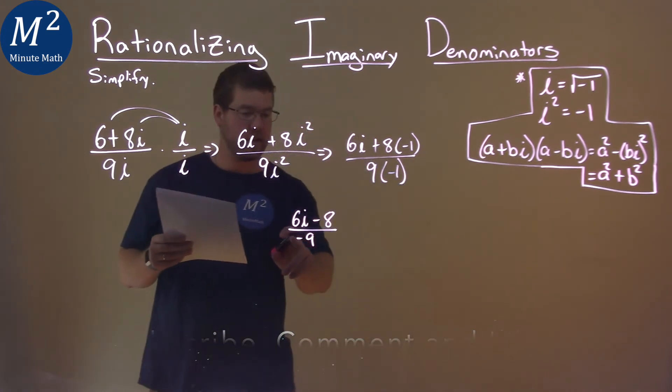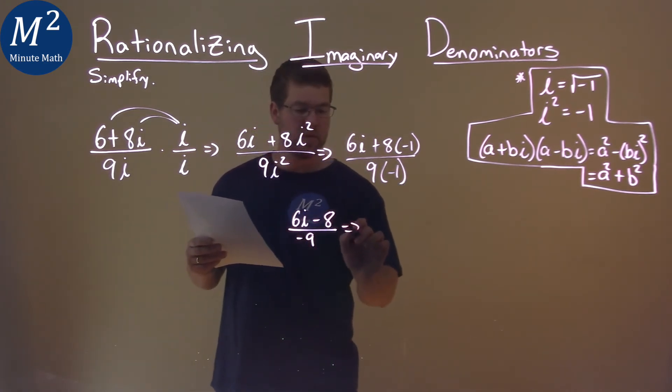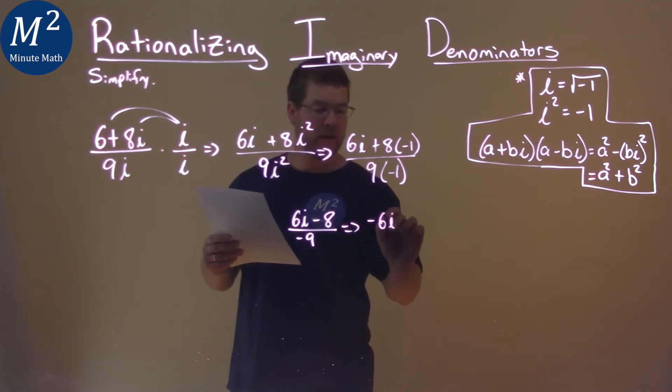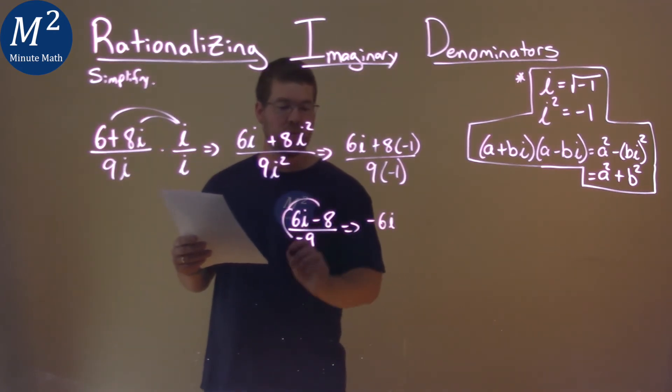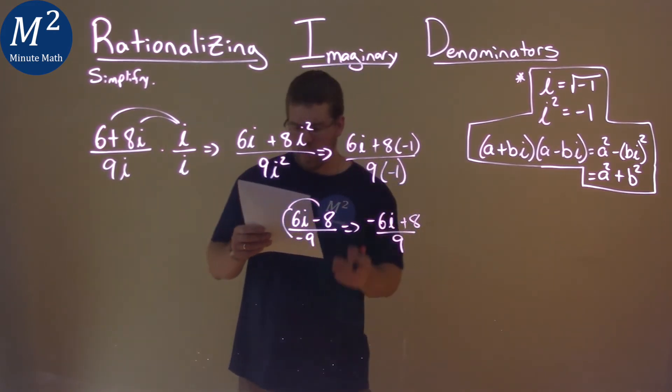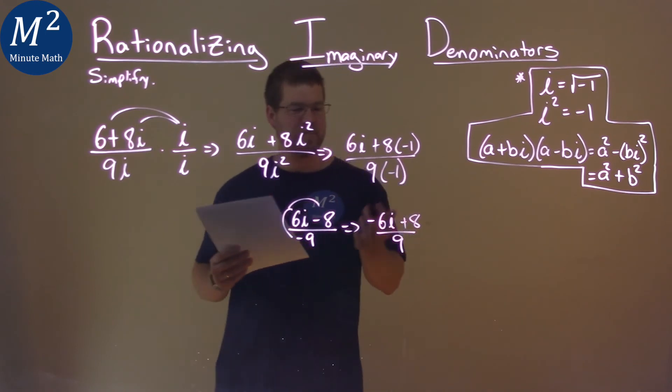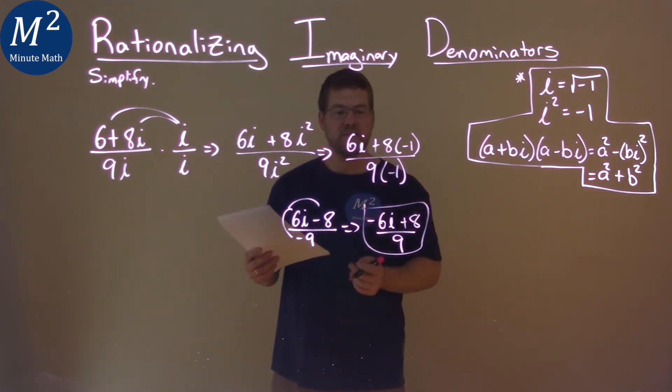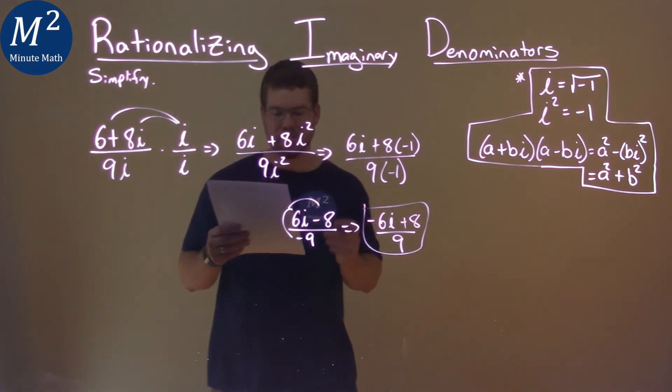Now if we wanted to distribute that negative to the numerator, we can bring it up top. So we have negative 6i, but then it gets distributed to both parts, plus 8 over a positive 9. Both of these will be the same answer. You might see it in different ways. But here we have our final answer: negative 6i plus 8 over 9.